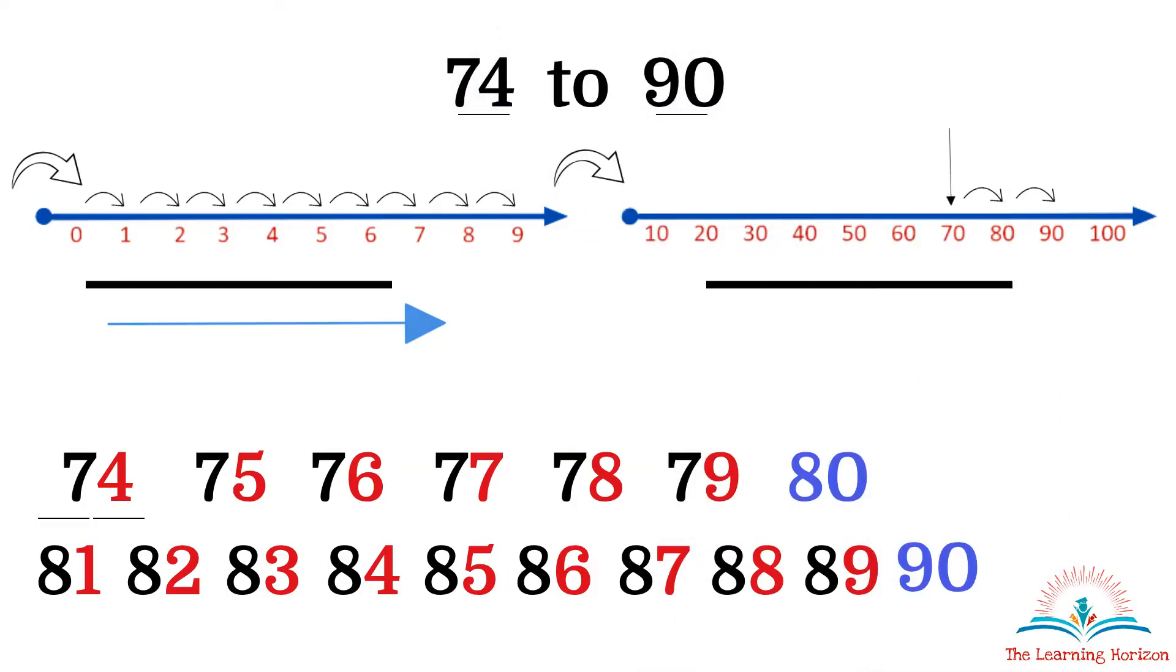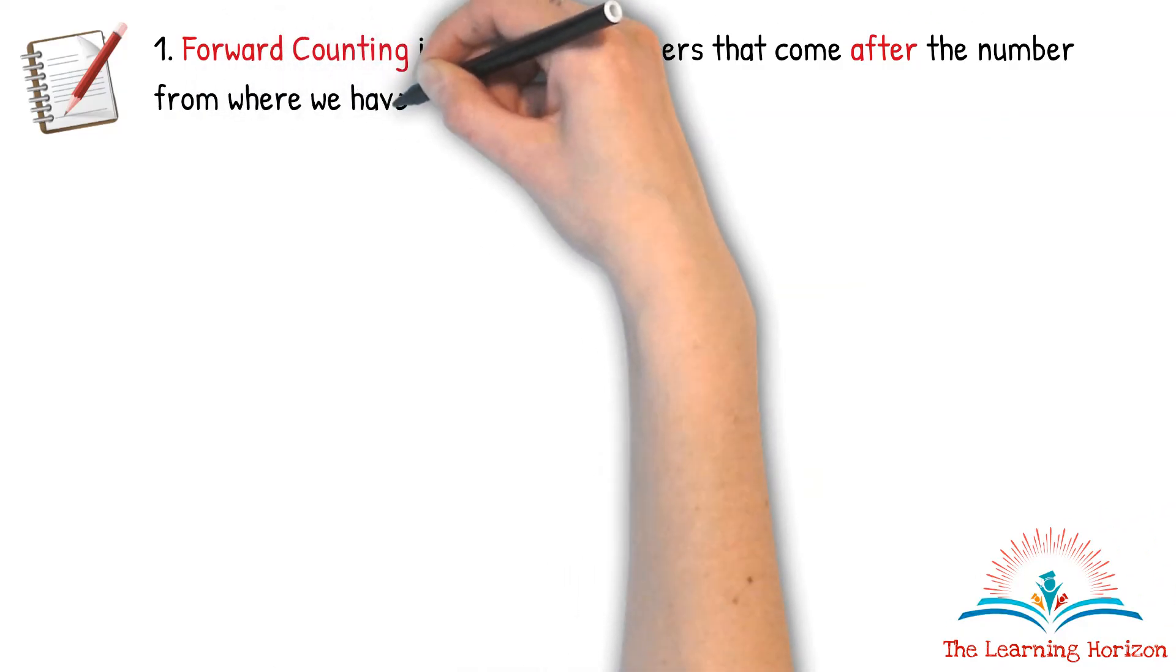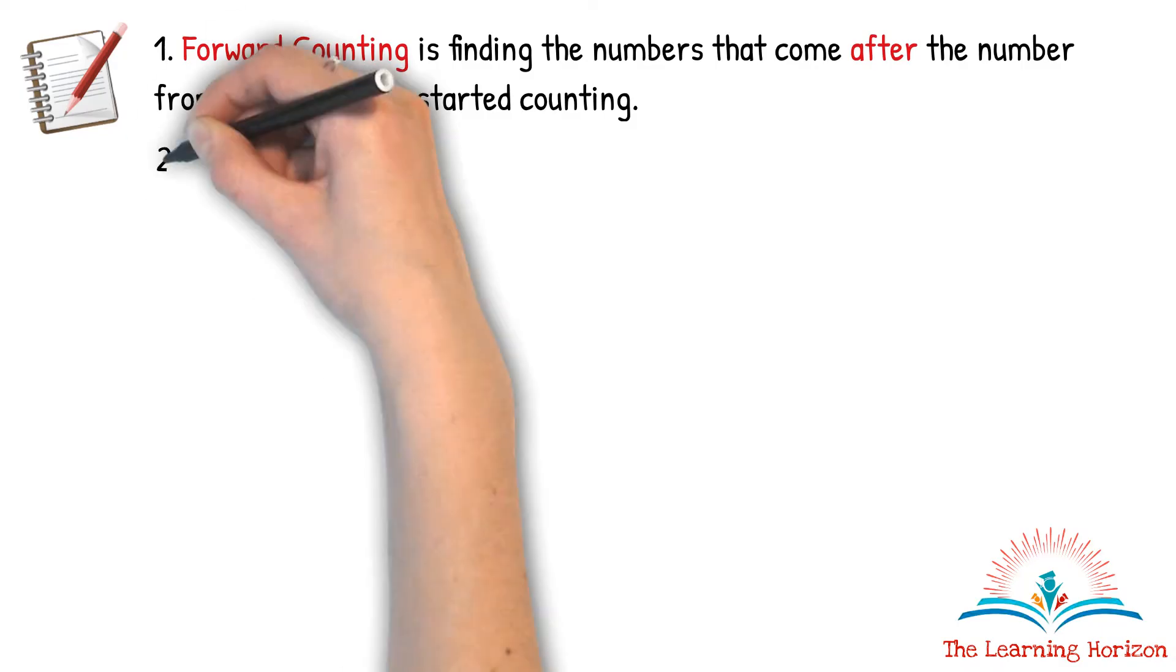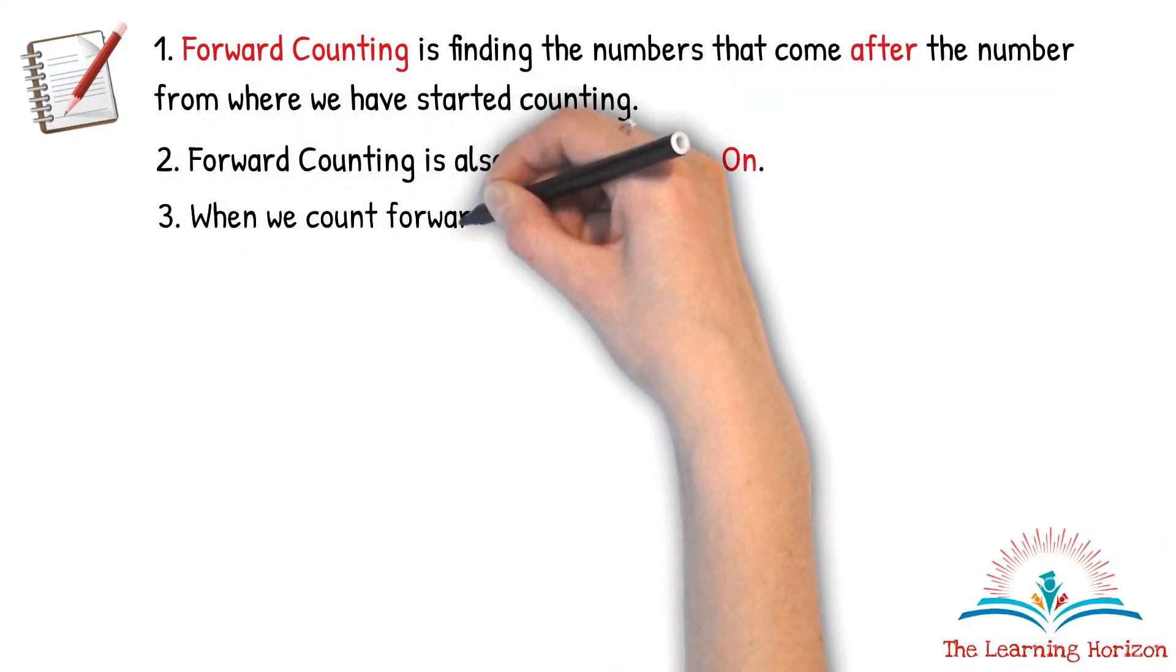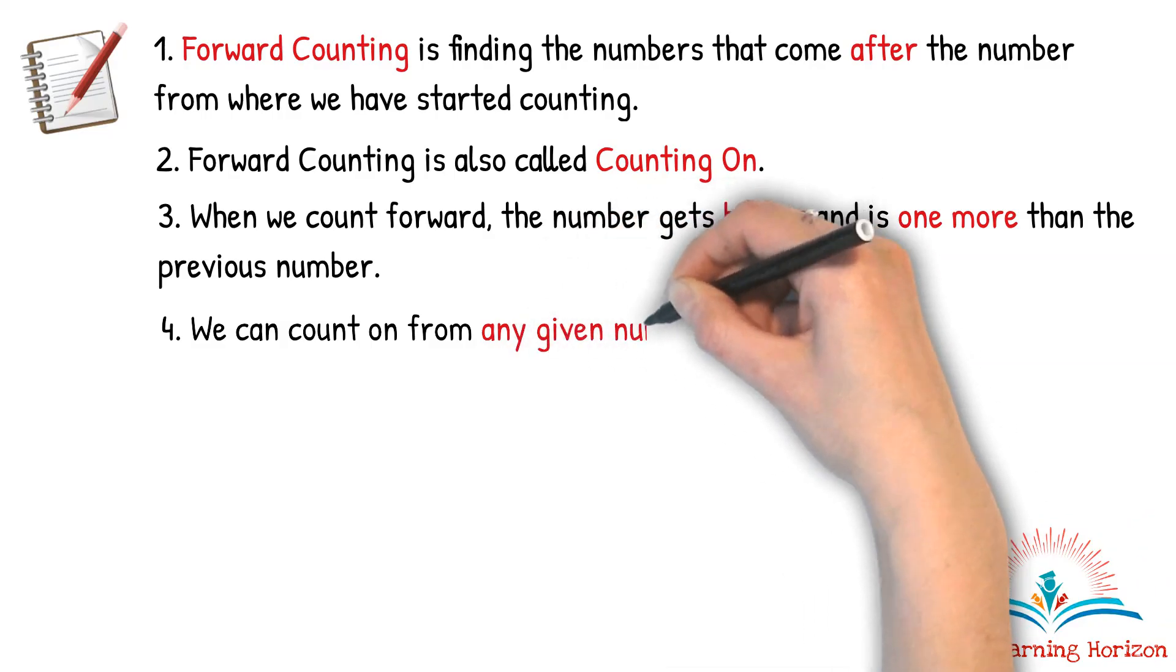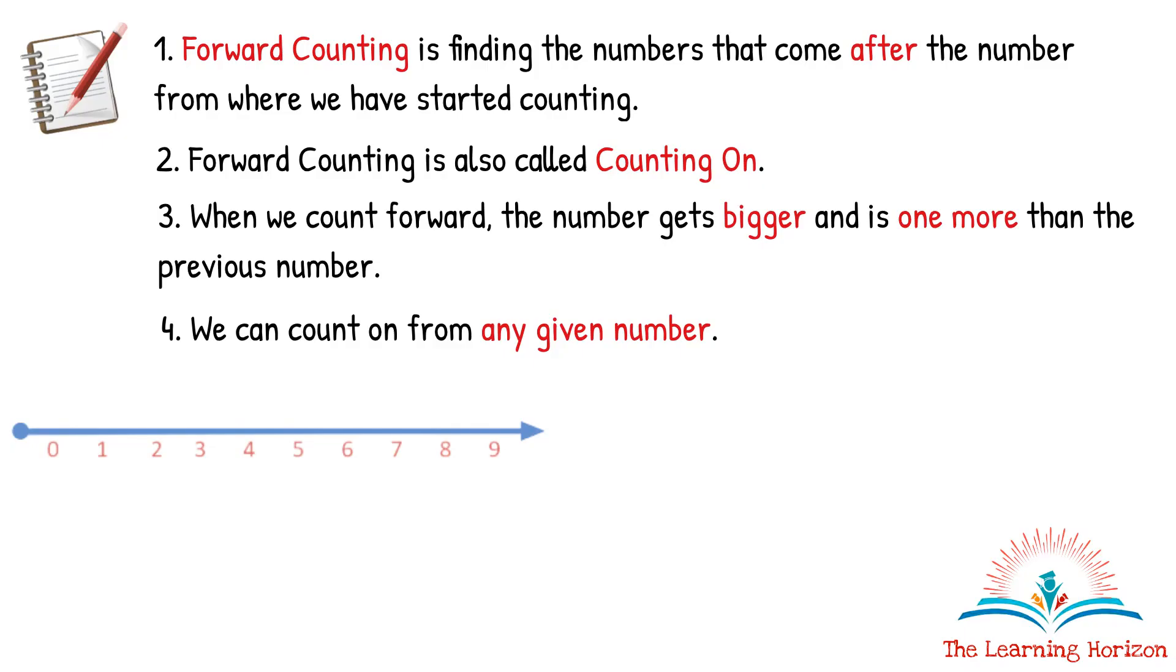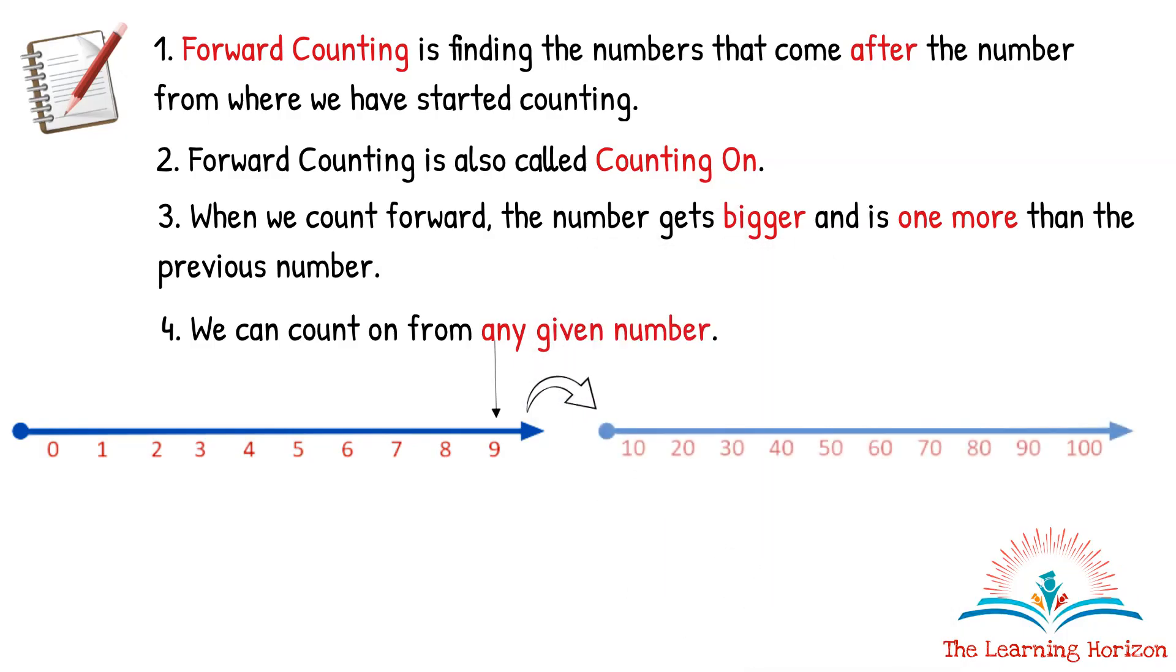So, to summarize our learning so far: forward counting is finding the numbers that come after the number from where we have started counting. Forward counting is also called counting on. When we count forward, the number gets bigger and is one more than the previous number. We can count on from any given number. Whenever we have 9 in the 1's place, we move on to the next 10 because we don't have any more digits after 9. One more than 9 always gives you a 10.